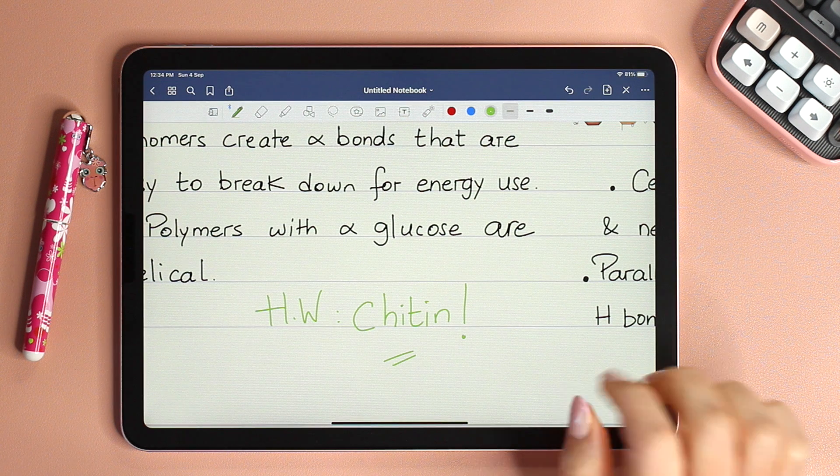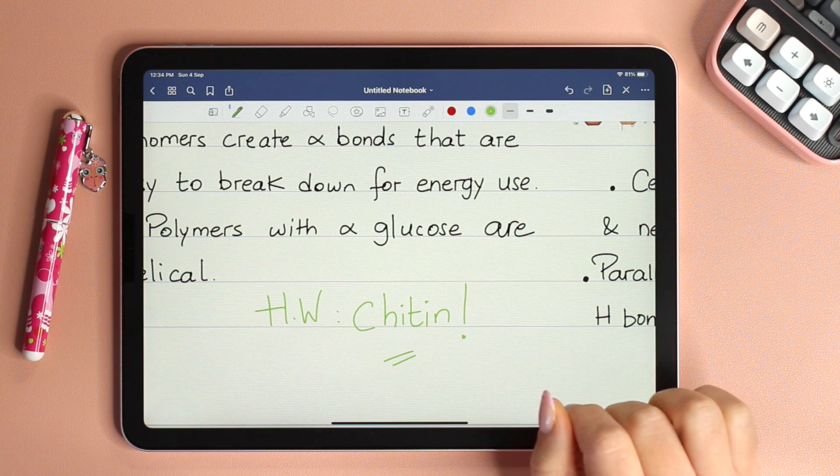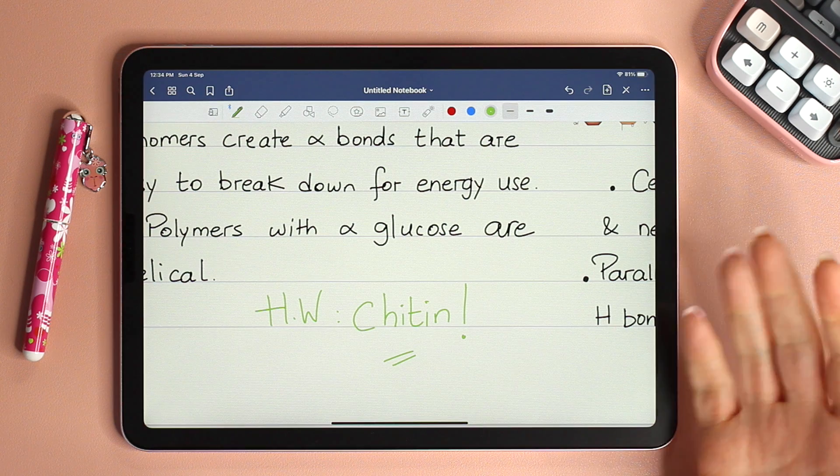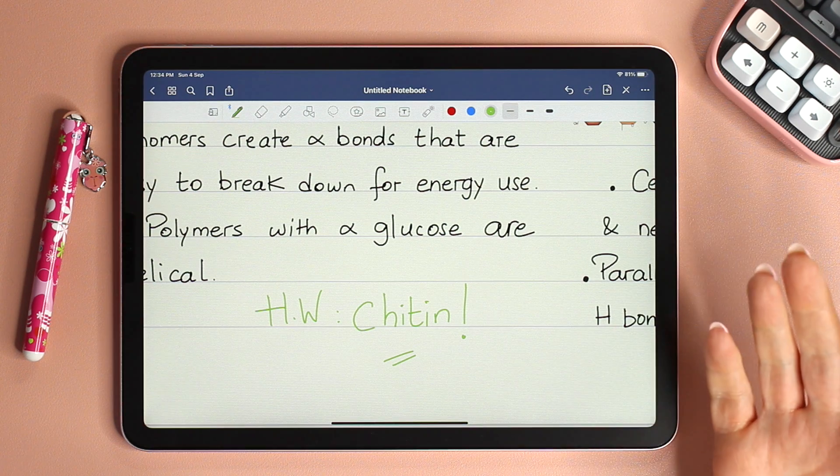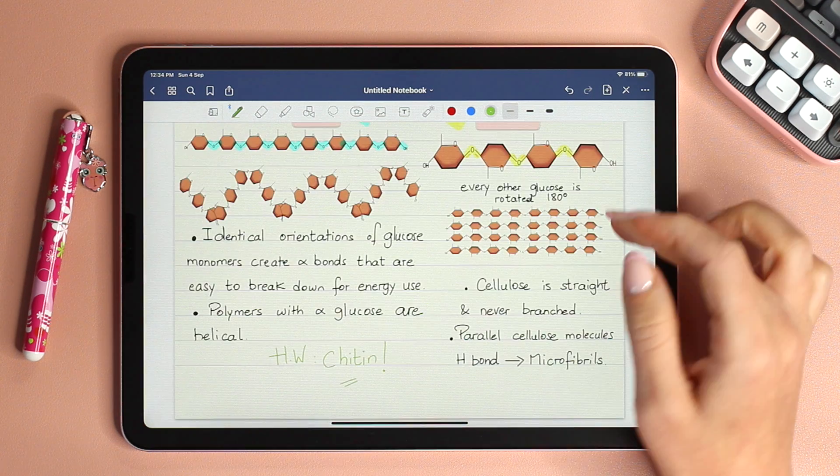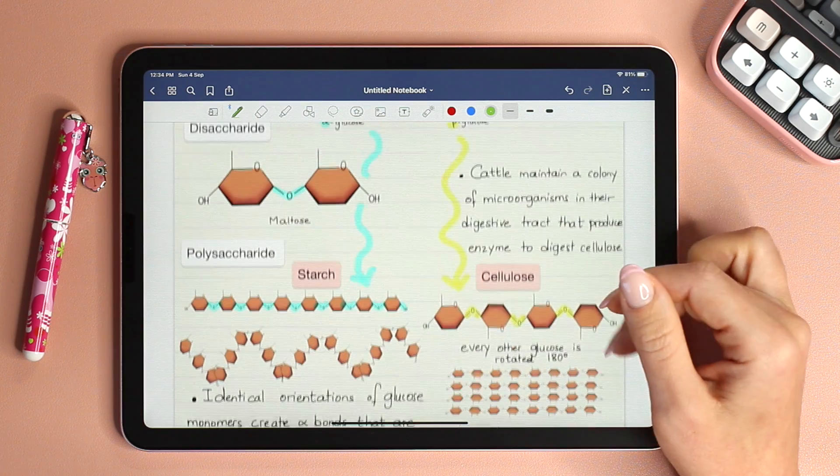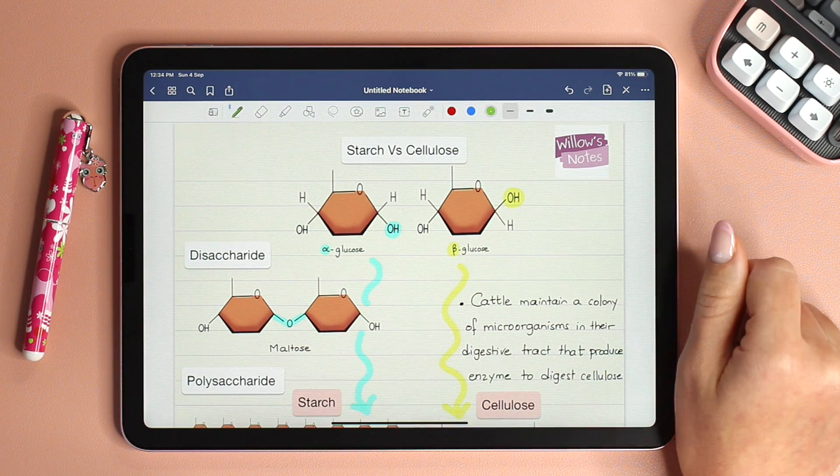As always, a little homework for you. Chitin, have you heard about it? What is it? What kind of a polymer is it? And where is it found? You guys work on that question and I will see you in the next video. Bye!